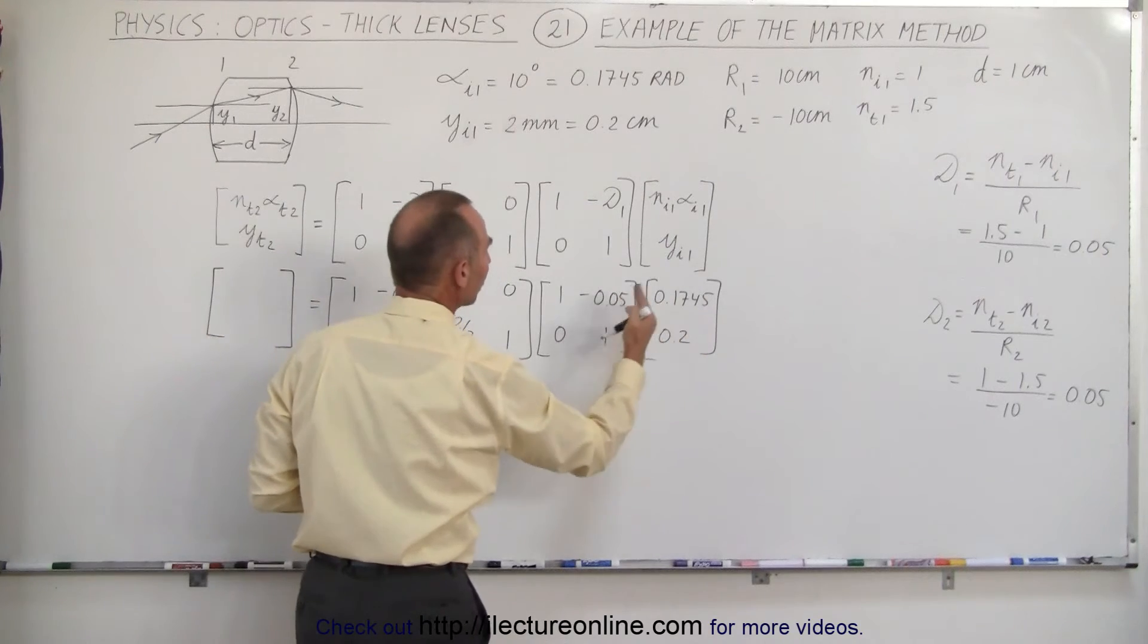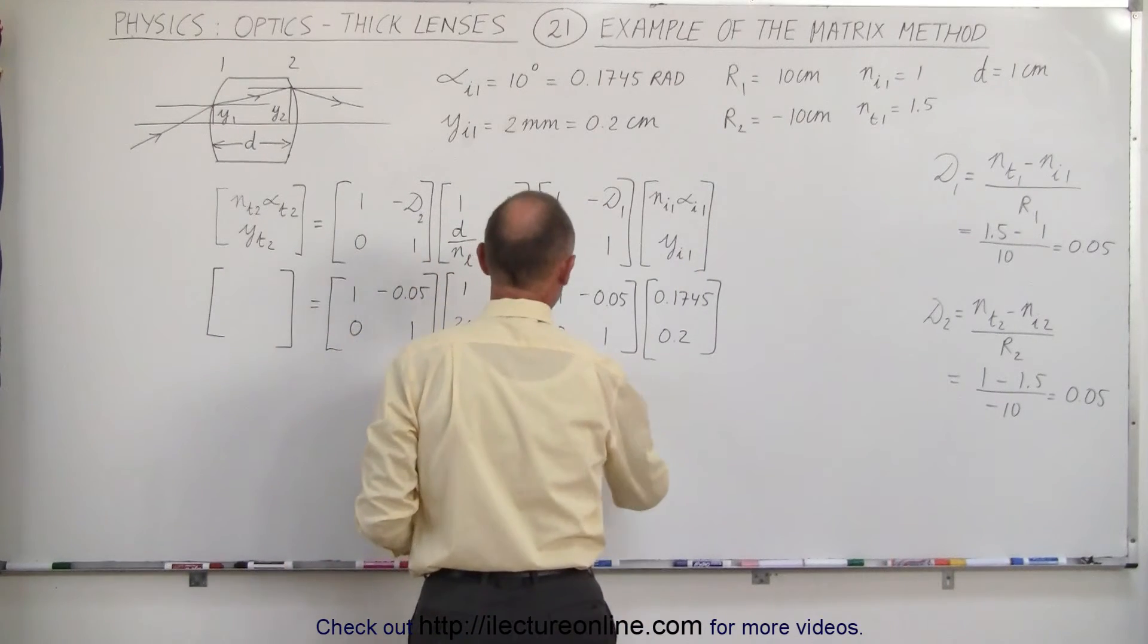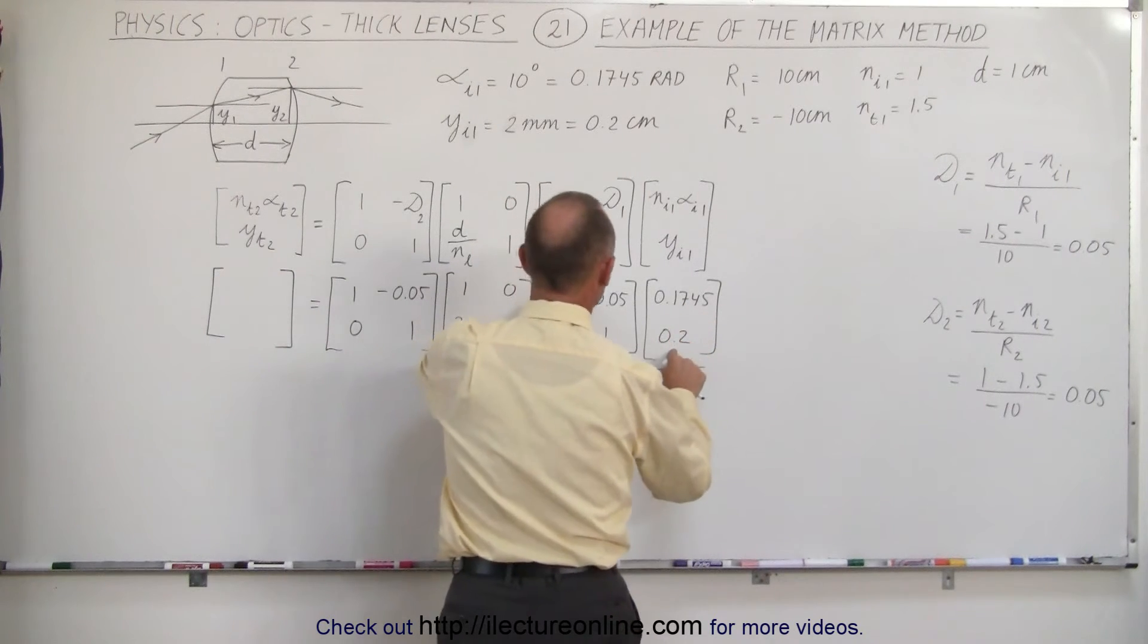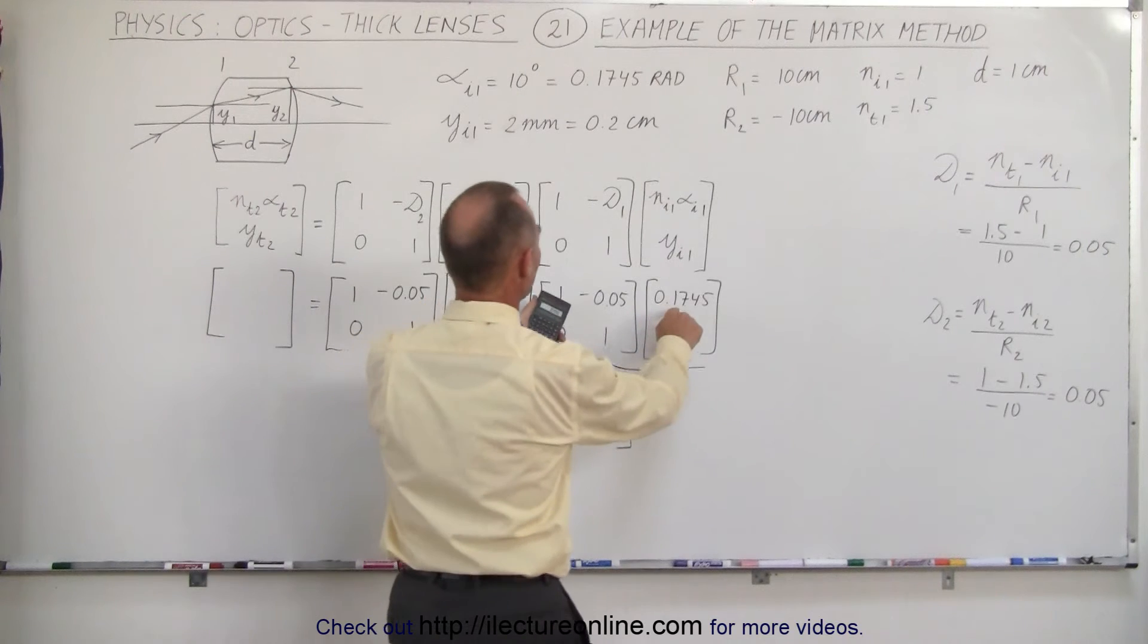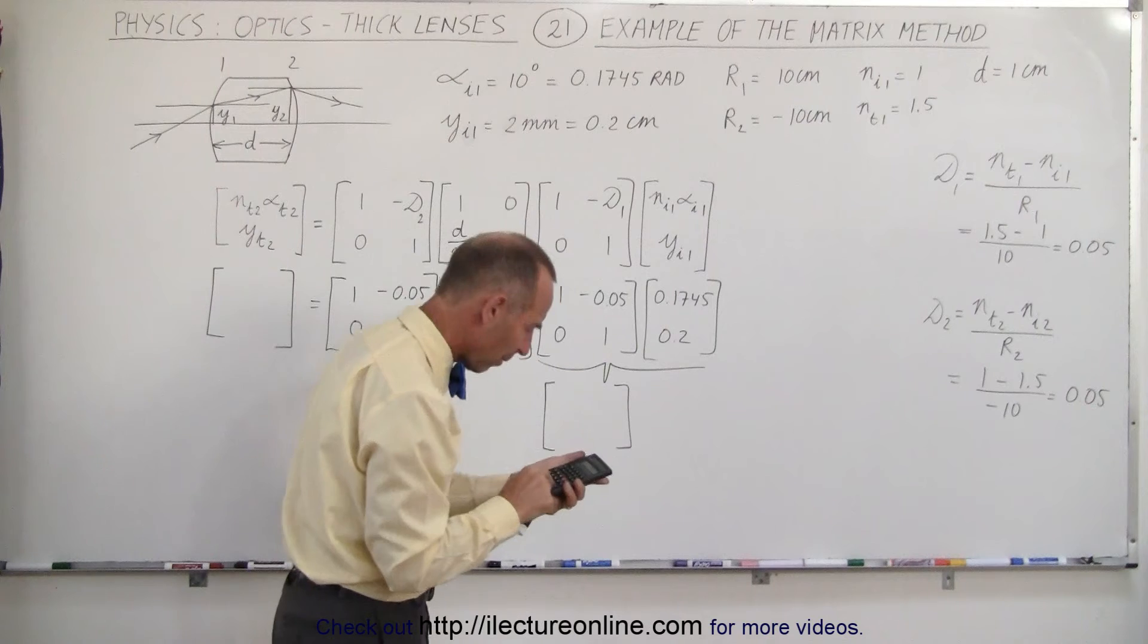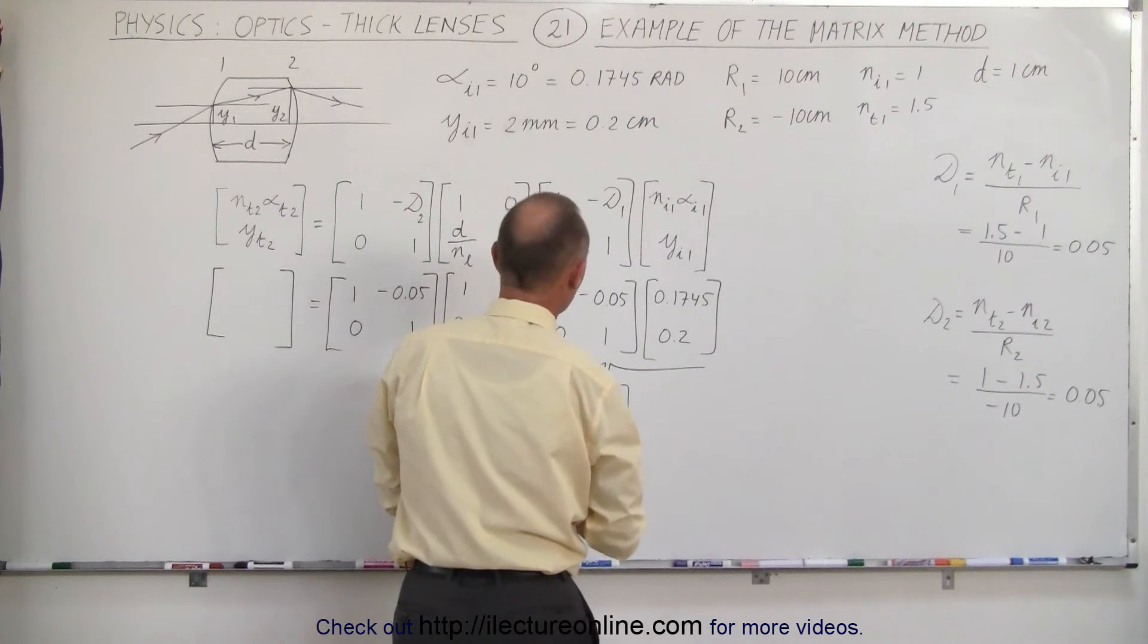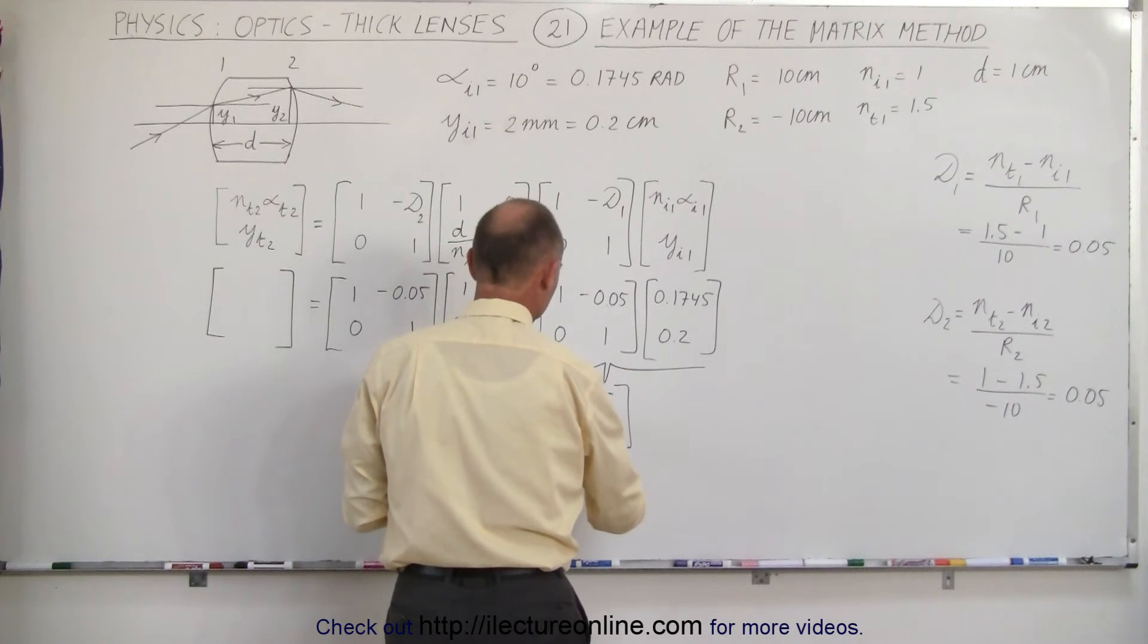We can find that by multiplying these matrices one matrix at a time, going from right to left. So first we're going to combine these two. And when we do that, we get a single matrix. This times this plus this times this gives us 0.1745. This times this, and that would be minus 0.01, because this times this gives us 0.01. It's a minus, so we get 0.1645. The second element is obtained by multiplying this times this plus this times this, which gives us 0.2.